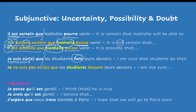However, je ne suis pas sûr que les étudiants fassent leur devoir — I am not sure anymore that students do their homework. Therefore here, je ne suis pas sûr — now you are doubting, you don't know anymore, you're not sure anymore. Therefore, now you will use the subjunctive. Again, you have two different subjects. Very important.